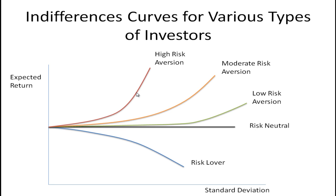The more common case is the risk-averse individual. I've got three possibilities here: low-risk aversion, moderate-risk aversion, and high-risk aversion. The low-risk aversion case has a fairly flat curve, which means you don't have to reward this person a great deal for taking on another unit of risk. You do have to give them more expected return, but not that much more, and the curve doesn't increase at a rapidly increasing rate.